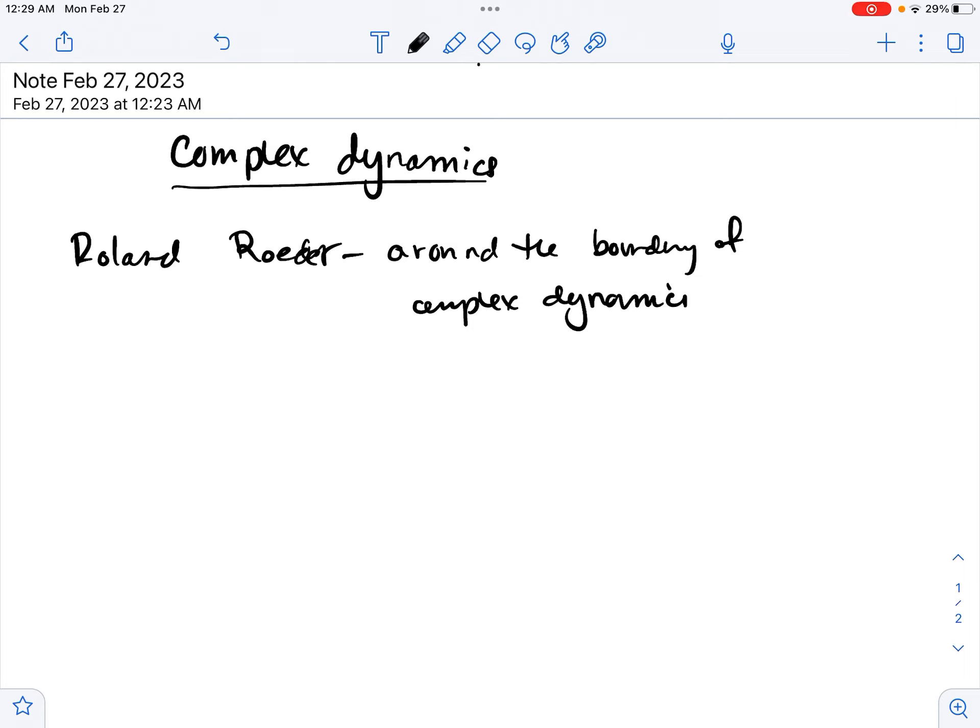The set of notes that we're going to be following for this portion of the course are by Roland Roeder. The notes are called Around the Boundary of Complex Dynamics. They were written for a summer research project for undergraduates and they're very nicely written. They include exercises. I will be augmenting this with ideas of my own and suggestions for further research.